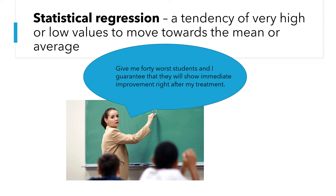Today we have discussed the six main threats to internal validity. There are other threats as well, such as experimental mortality — the loss of subjects who may die during a long-running study. Another example is the John Henry effect, where a worker outperformed a machine under experimental conditions because he was aware his performance was being compared to it. Make sure you research the other threats as well.